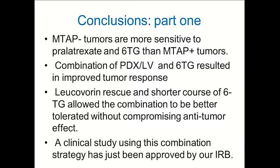By adding leucovorin and decreasing the schedule for 6-thioguanine, we could get great tumor regression without much toxicity. Our conclusions are that MTAP-deficient tumors are more sensitive to pralatrexate and 6-thioguanine than MTAP-positive tumors, and the combination resulted in improved tumor response due to leucovorin rescue.